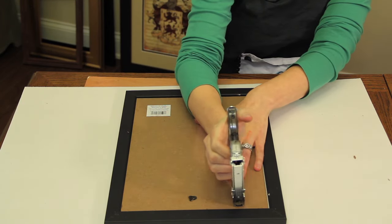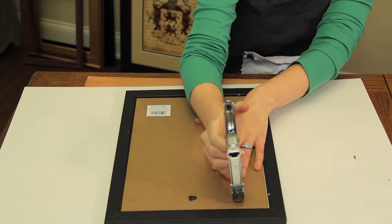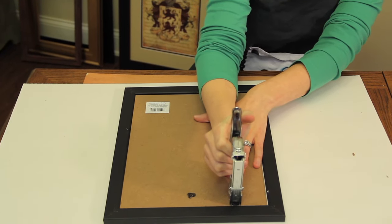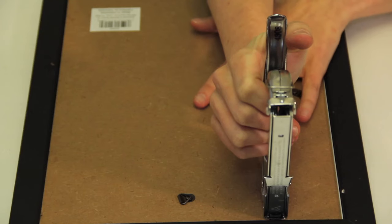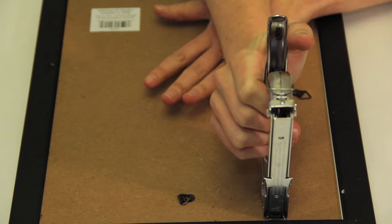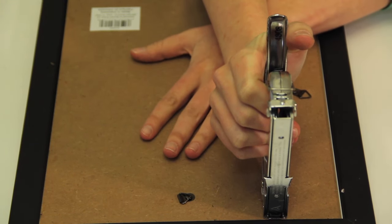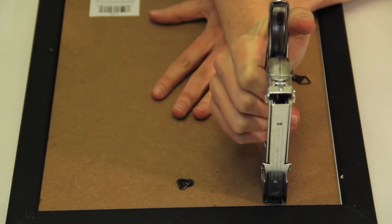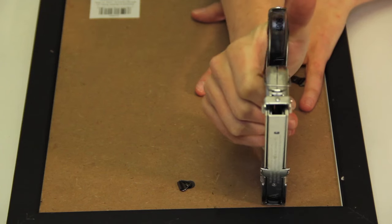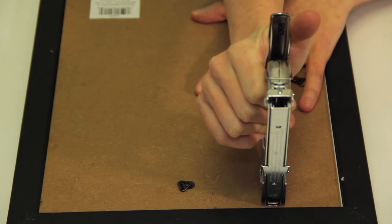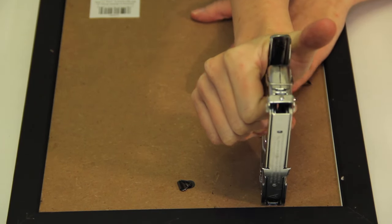Use your staple gun upside down and firmly put your staple gun against your backer. You want to make sure that you don't press down hard enough that it's going to break the glass, but firm enough that you're going to be able to get this staple gun in securely.